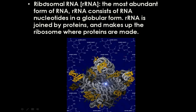Ribosomal RNA, often abbreviated as rRNA, is the most abundant form of RNA. rRNA consists of RNA nucleotides in a globular form — a large, three-dimensional shape — which is joined by proteins. This is what actually makes the ribosome. So all a ribosome is, is RNA in a globular form with a few other proteins.